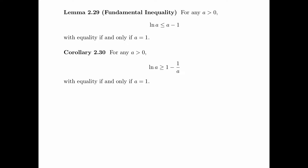The corollary of the fundamental inequality is Corollary 2.30. It says that for any a > 0, log a is greater than or equal to 1 minus 1 over a.